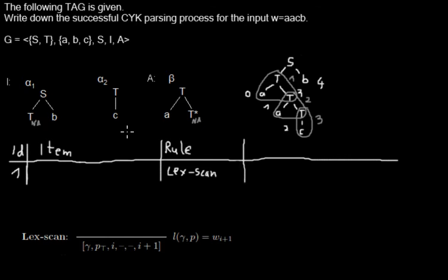Here we have the tree adjoining grammar given. This is the input string that we want to parse, and this is the tree that is supposed to stand at the end if we have parsed this input string with the grammar.